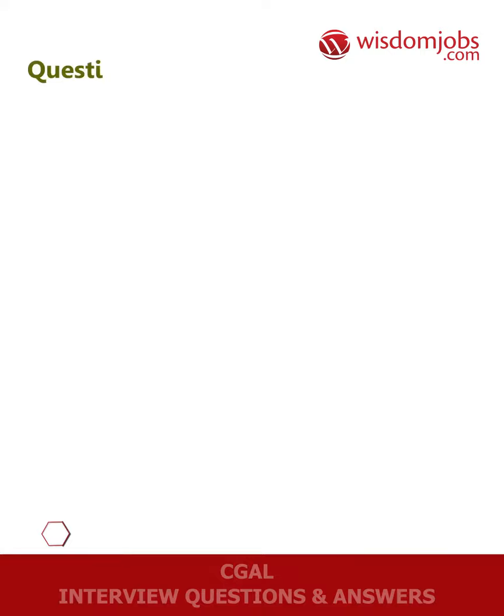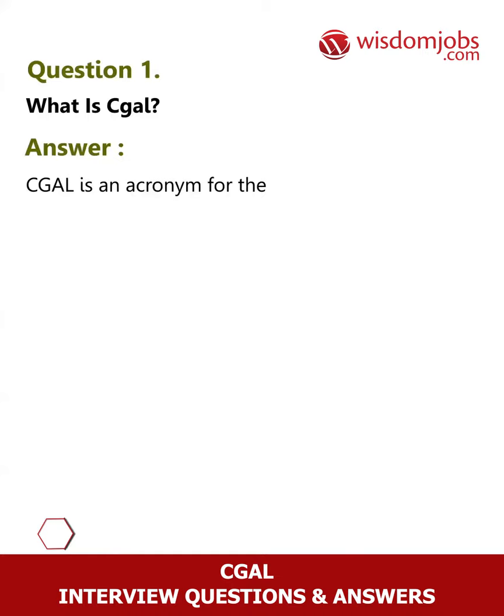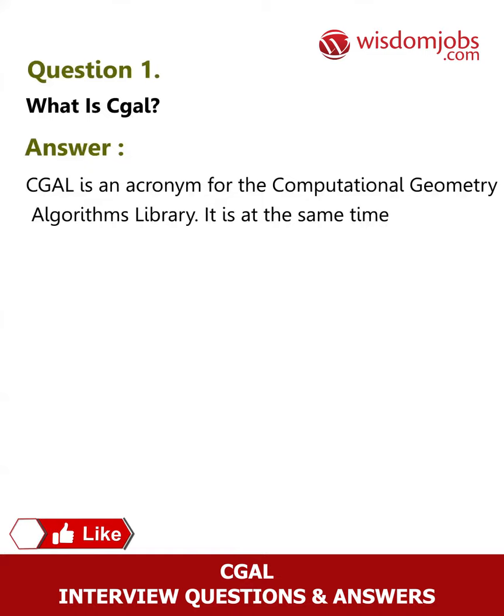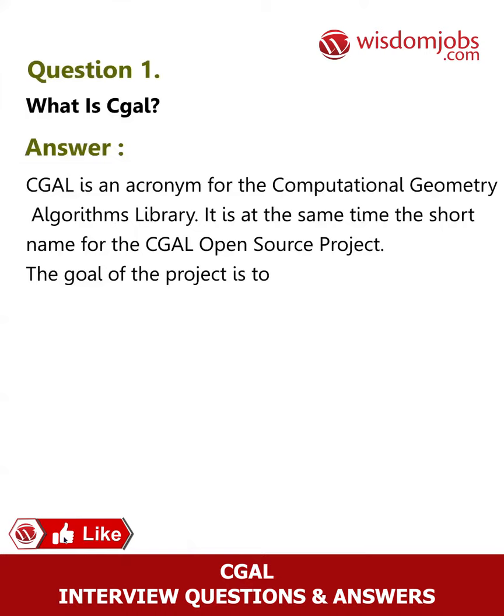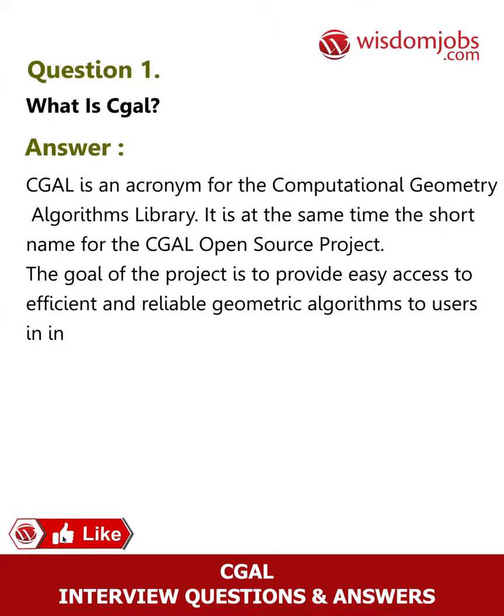Question 1: What is CGAL? Answer: CGAL is an acronym for the Computational Geometry Algorithms Library. It is at the same time the short name for the CGAL open source project. The goal of the project is to provide easy access to efficient and reliable geometric algorithms to users in industry and academia.